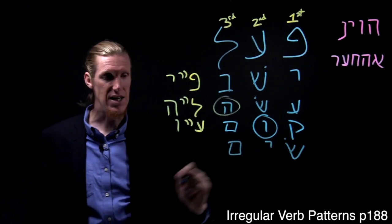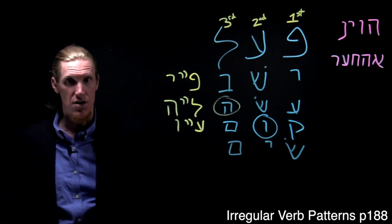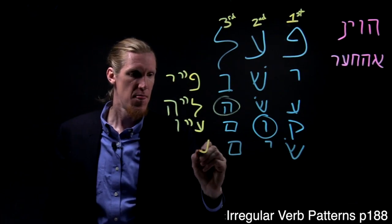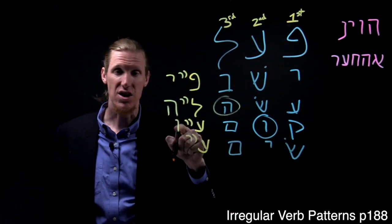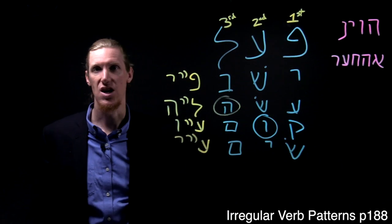Here's another example of a hollow verb: Seem. This is also hollow, but instead of being Ain Vav, it's Ain Yod.